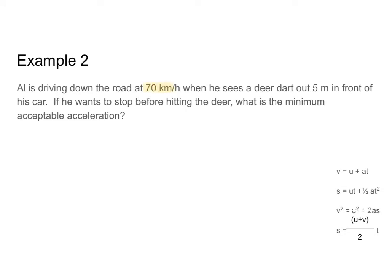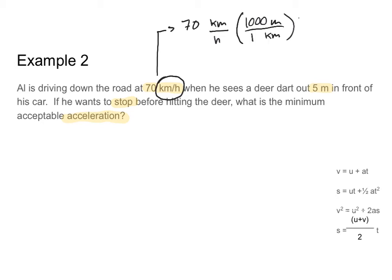Let's do one more example. Al is driving down the road at 70 kilometers per hour when he sees a deer dart out five meters in front of his car. If he wants to stop before hitting the deer, what is the minimum acceptable acceleration? The first thing I notice is that 70 km/h is not in standard units, so I need to convert it to meters per second. Using unit conversion — 1000 meters per kilometer and 3600 seconds per hour — that gives a velocity of 19 meters per second.